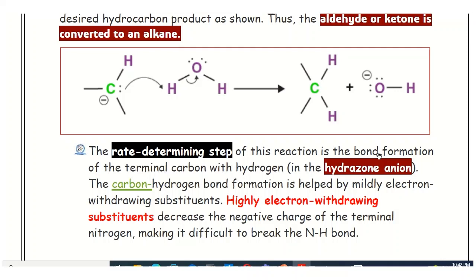The rate-determining step is the step in which the carbon-hydrogen bond formation at the terminal carbon takes place — essentially the carbanion step. This step can be affected by various types of functional groups. Highly electron-withdrawing substituents have a negative effect on this rate-determining step because they decrease the negative charge of the terminal nitrogen, making it harder to break the nitrogen-hydrogen bond. Substituents should be low or mildly electron-withdrawing.